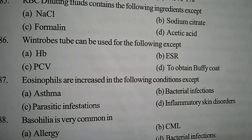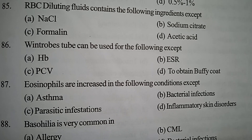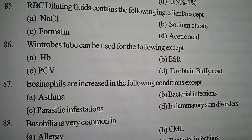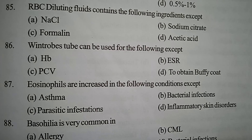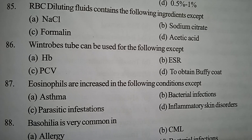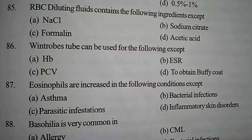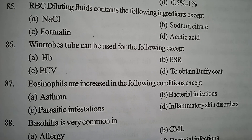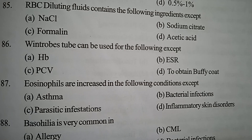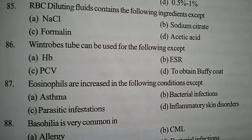Next one: eosinophils are increased in the following conditions except — Option A: asthma. Option B: bacterial infections. Option C: parasitic infections. Option D: inflammatory skin disorders. Correct answer: Option B, bacterial infections. In all others, eosinophils are increased.